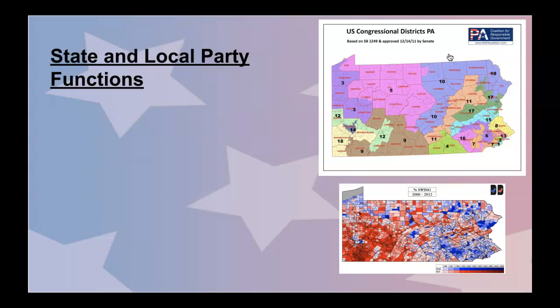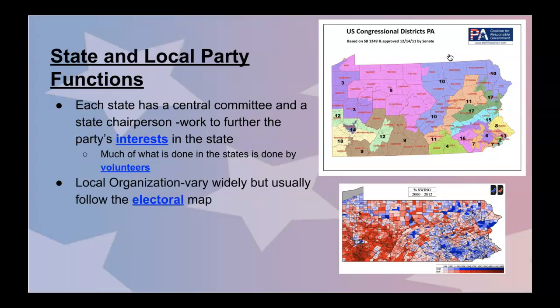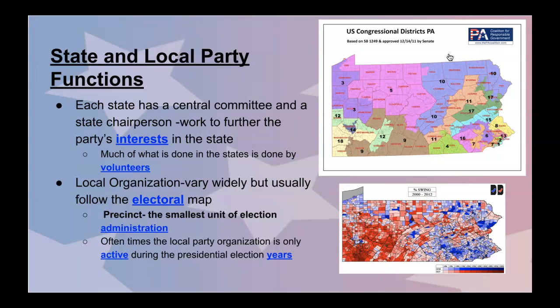Let's look at the smallest level of government — why do political parties matter when it comes to counties and local districts? Each state has a central committee and a state chairperson to further the party's interest in the state. Much of what is done in the states is done by volunteers rather than big political party organizations. The local organizations vary widely but usually follow the electoral map, identifying which precincts lean which way and trying to turn out voters. The local party organization is often only active during presidential election years, but they try to get people to turn up not only on election day but also at town halls, debates, forums, and fundraisers for their candidates.